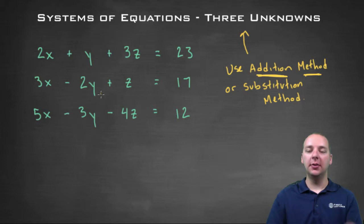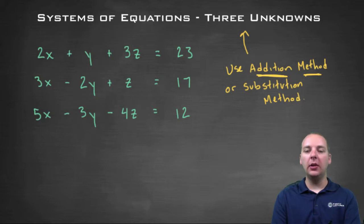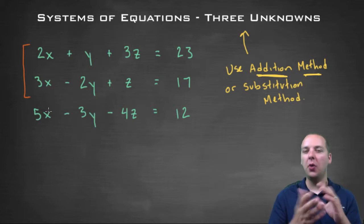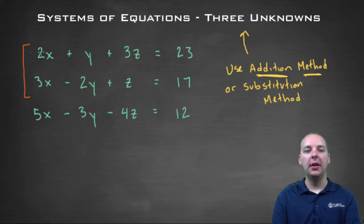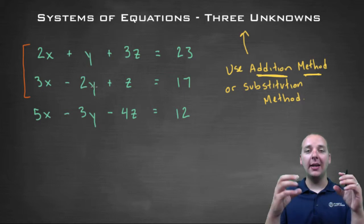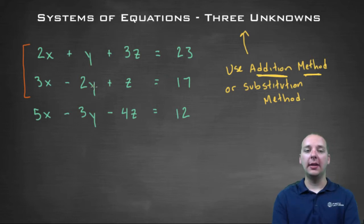Here's the big picture concept of what we need to do. We're going to try to eliminate one of the variables — either the x's, the y's, or the z's. For example, if we combine the first two equations, we might have to tweak some coefficients, but we can pretty easily get rid of the y's using the addition method. If we multiply the top row by two, we'd have a 2y and a minus 2y, and when we add those two equations together, those y's would be eliminated.